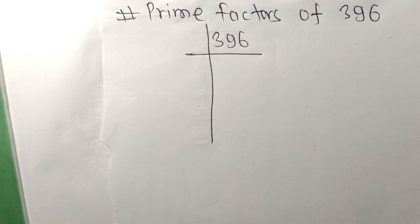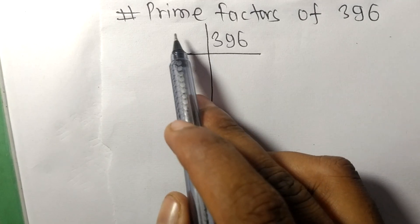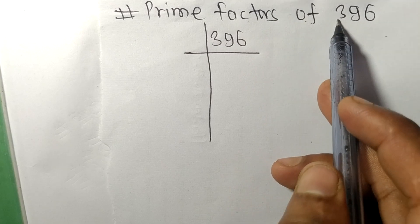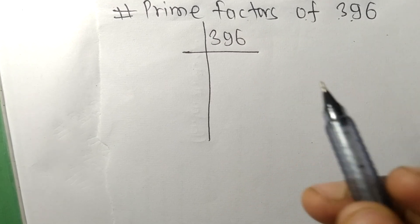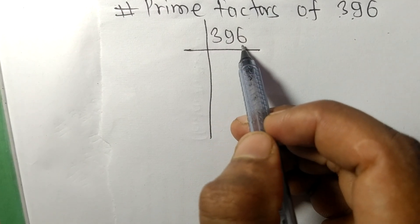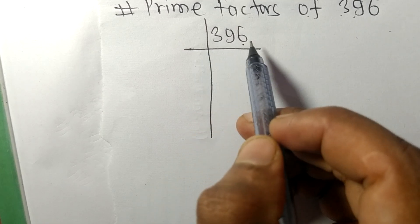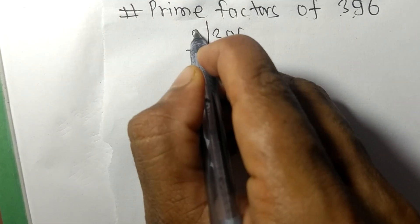Today in this video we shall learn to find the prime factors of 396. At last it contains even number 6, so this whole number is divisible by 2.